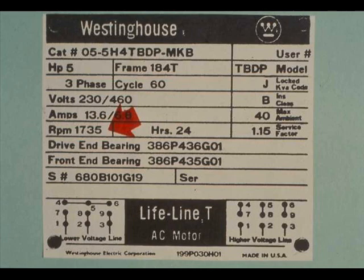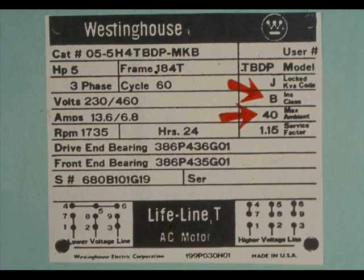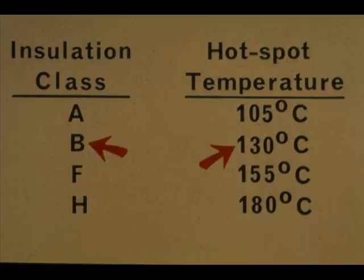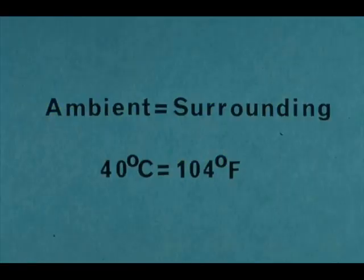The code further requires that the rated full-load speed be stated. This motor's rated speed is 1,735 revolutions per minute. The manufacturer has the option of including either the rated temperature rise or the insulation system class and the rated ambient temperature. In this case, the manufacturer has chosen the latter. The winding wires of this motor have class B insulation, good for operation at a maximum ambient temperature of 40 degrees centigrade. Class B insulation is safe for sustained operation when the hottest spot in the motor windings does not get hotter than 130 degrees centigrade, equivalent to 266 degrees Fahrenheit. Ambient means surrounding — this motor is designed for operation in a space where the temperature is not more than 40 degrees centigrade or 104 degrees Fahrenheit.